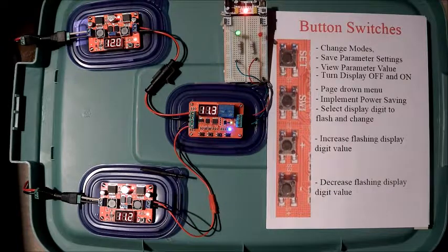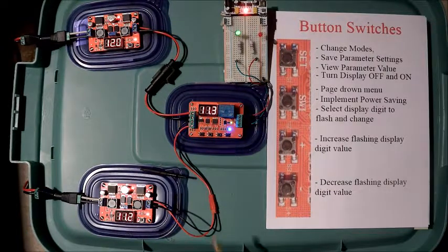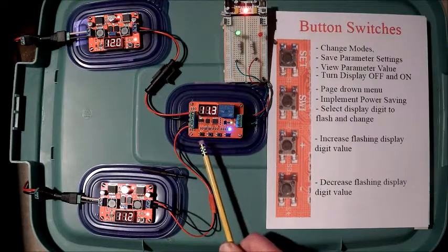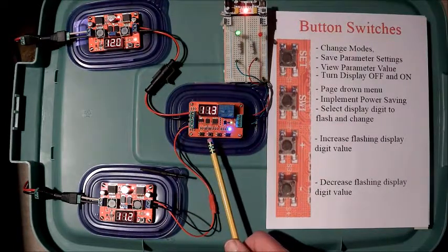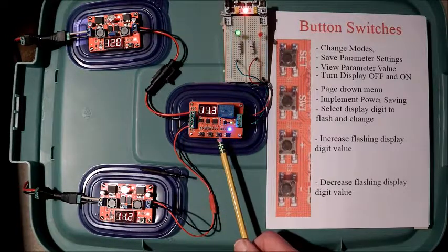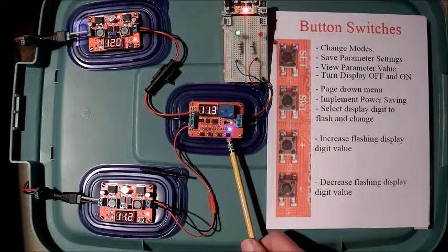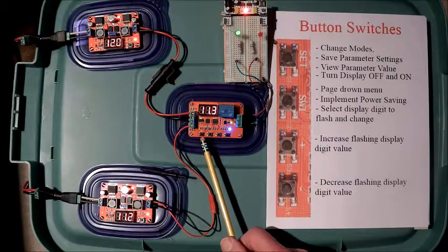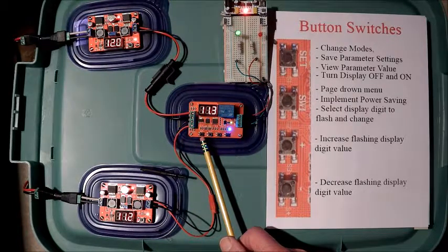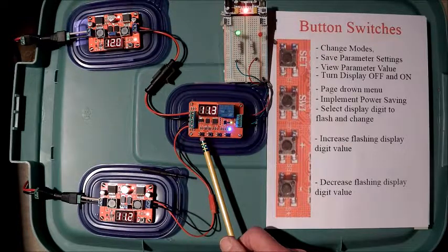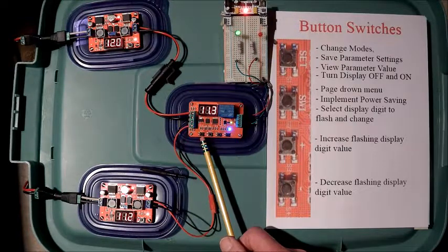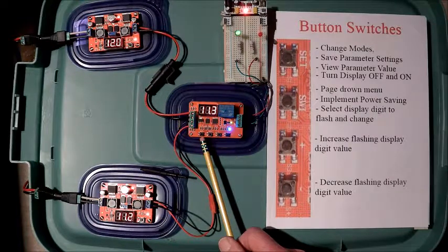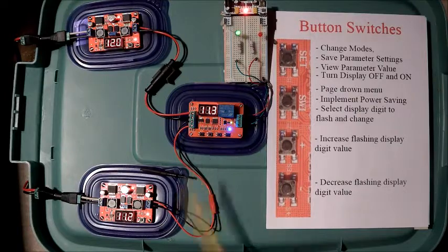Button switches. Four button switches on the module. Set, switch one, increase, decrease. The set button will change the modes, operational and parameter set. It will save the parameter settings when you set them up. It will view the parameter values and it will turn the display on and off.